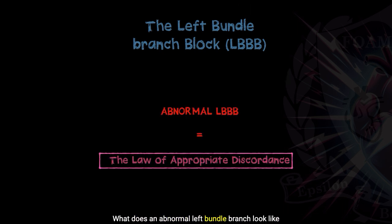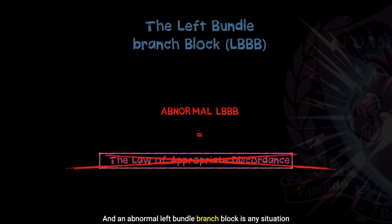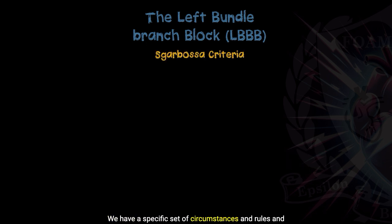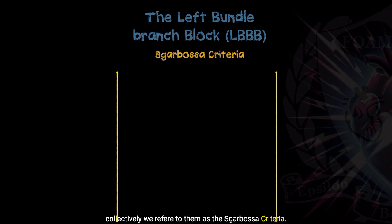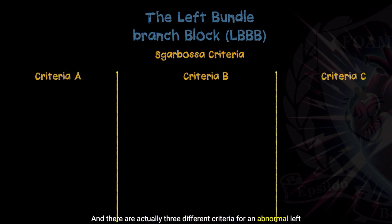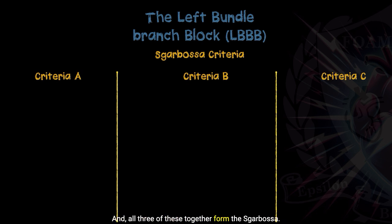What does an abnormal left bundle branch block look like, specifically in terms of acute myocardial infarction? An abnormal left bundle branch block is any situation where the law of appropriate discordance is violated. We have a specific set of circumstances and rules, and collectively we refer to those as the SCARBOSA criteria. There are actually three different criteria for an abnormal left bundle branch block, and they're known as criteria A, B, and C. All three of these together form the SCARBOSA.